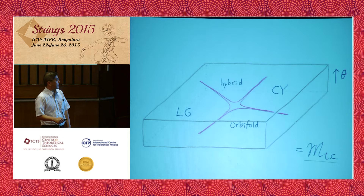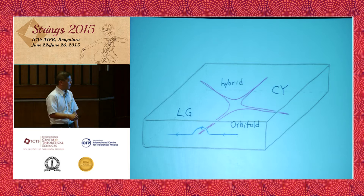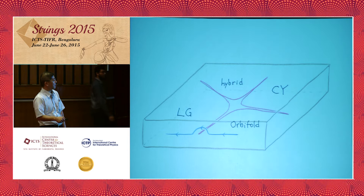The moduli space has a discriminant locus where the Coulomb branch develops, and it is a lift of the phase boundaries. Because the discriminant locus is a complex hypersurface, you can go from one phase to another by avoiding this discriminant locus — going from one phase to another without encountering a sharp transition.